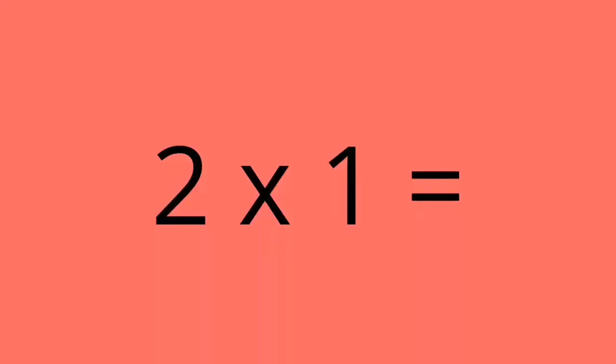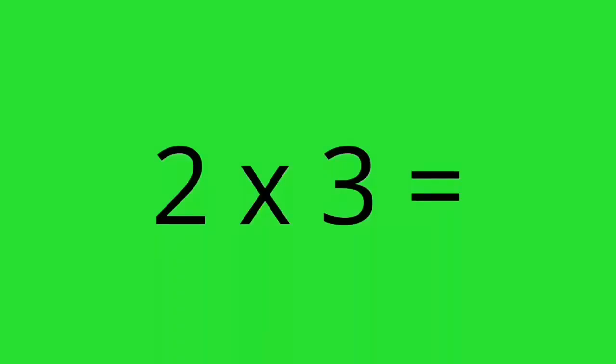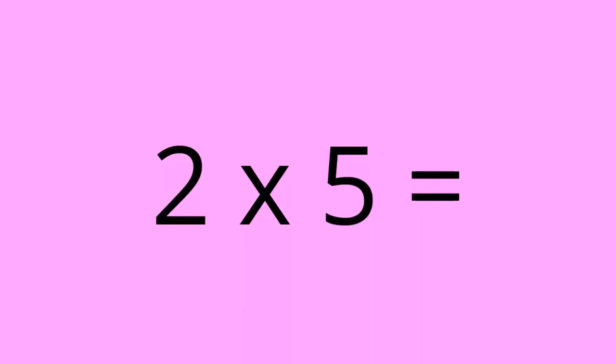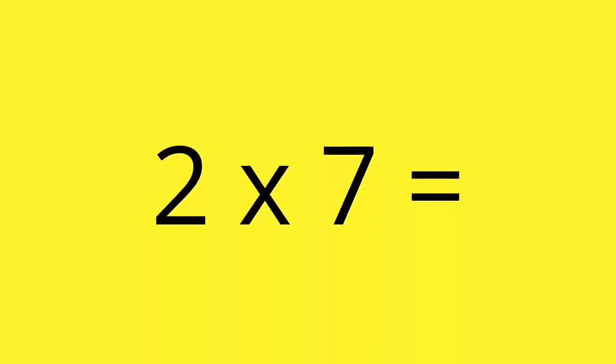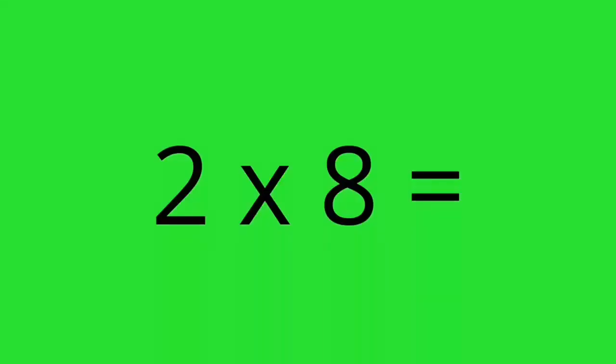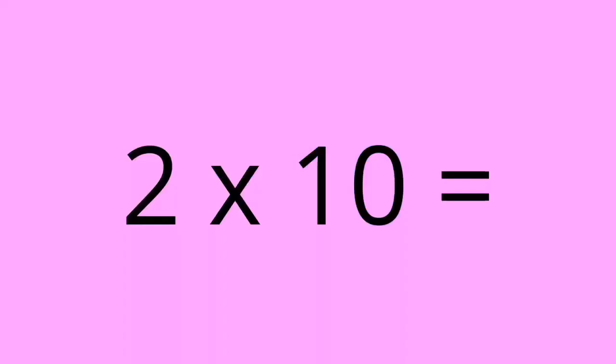2 times 1 equals 2. 2 times 2 equals 4. 2 times 3 equals 6. 2 times 4 equals 8. 2 times 5 equals 10. 2 times 6 equals 12. 2 times 7 equals 14. 2 times 8 equals 16. 2 times 9 equals 18. 2 times 10 equals 20.